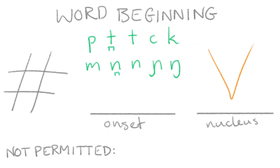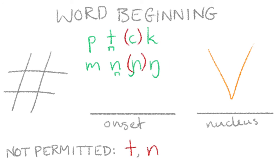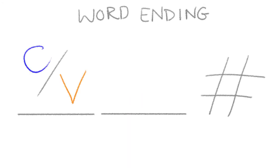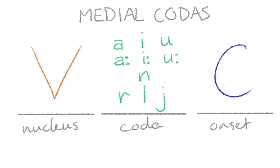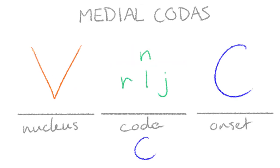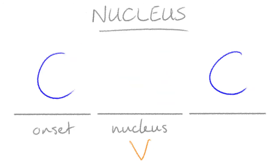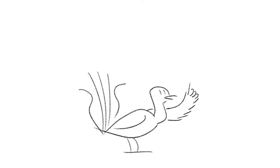The phonotactics of Gamilarai are as follows: words may begin with most obstruents and nasals, aside from the plain alveolars and very rarely the palatals, as well as the semi-vowels. Words may not begin with vowels, rhotics, or the lateral approximant. Words may only end with vowels, the alveolar nasal, the trilled rhotic, the lateral approximant, and the palatal semi-vowel. Medial codas also follow this pattern except the bilabial and velar nasals are permitted and the palatal semi-vowel is not. Any of the six vowel phonemes may make up a syllable nucleus, as well as the diphthongs AI and UI.